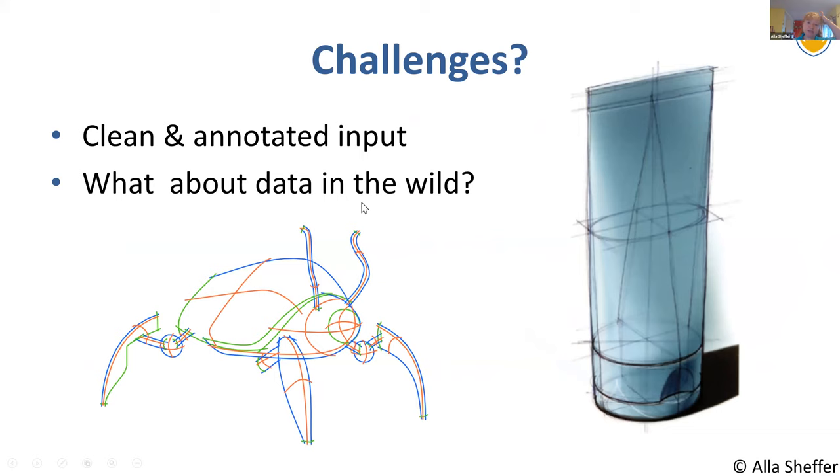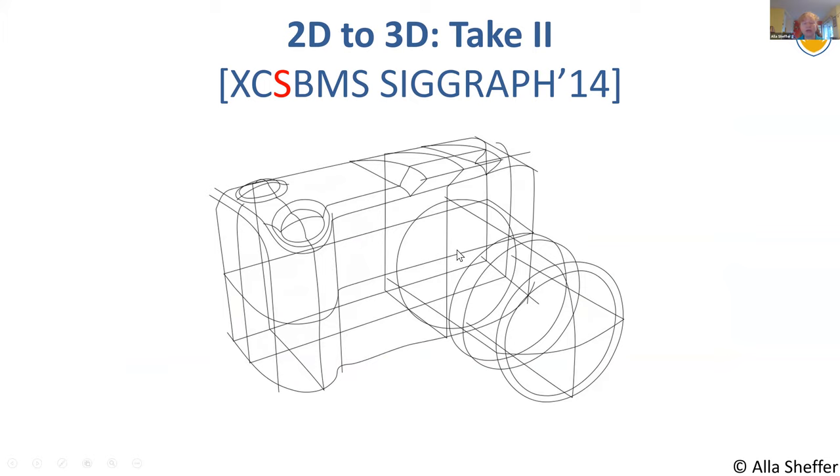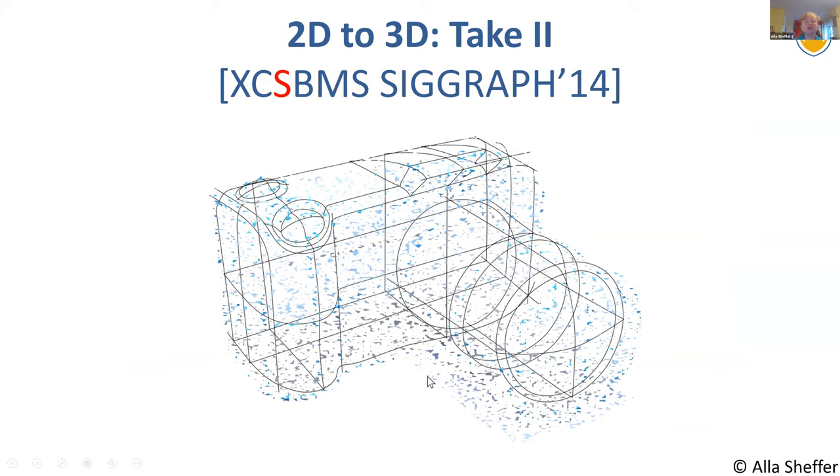They have certain very strong properties. Are we done? Well, no, because this data is extremely clean. You may notice that the curves here have different colors because every color corresponds to a different meaning. And this is extremely clean and we have a lot of annotations of the curves. So how do we go to data in the wild?